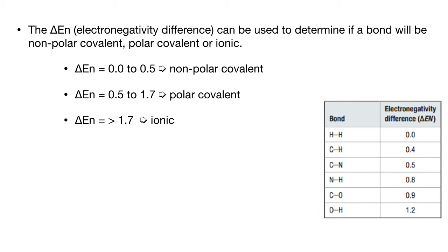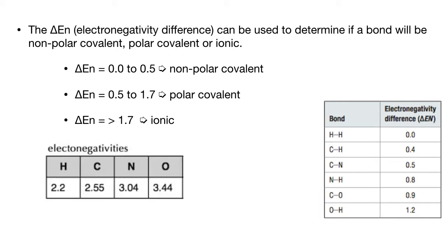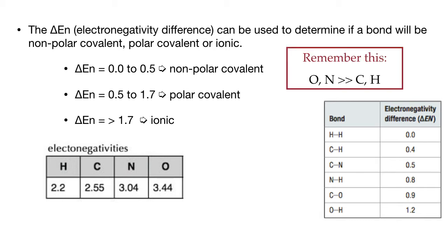For biology class, we will not bother calculating electronegativity differences. Since we mostly deal with bonds between oxygen, nitrogen, carbon, and hydrogen, we just need to remember that oxygen and nitrogen have high electronegativity values, and hydrogen and carbon have much lower ones. So bonds between carbon and hydrogen will be non-polar, while bonds between nitrogen and carbon, or hydrogen and oxygen, or hydrogen and carbon will be polar. This is a shortcut so you don't have to calculate electronegativity differences to figure out which bonds are polar or non-polar.